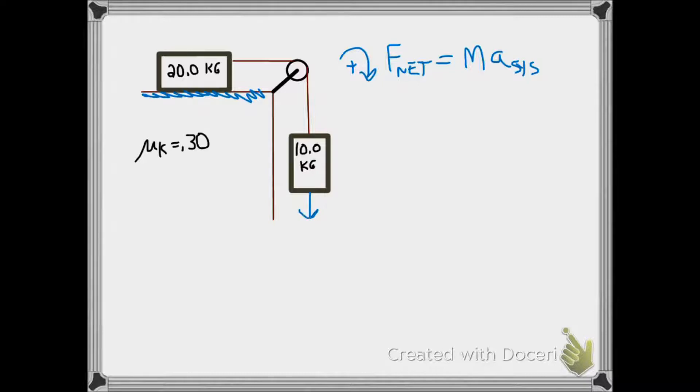Our force diagram shows the 100 newton force pulling down on the 10 kilogram mass, our friction force opposing motion as it always does, the 200 newton weight of the 20 kilogram block, and the corresponding normal force, in this case also 200 newtons.